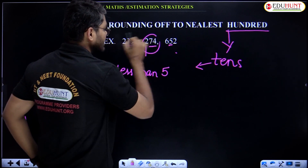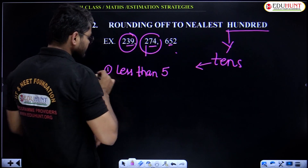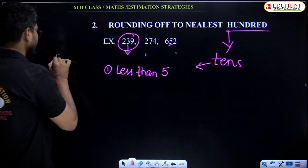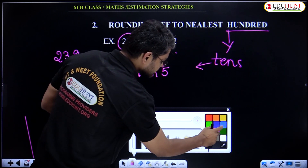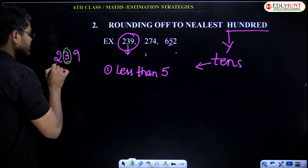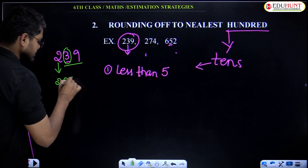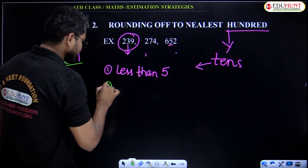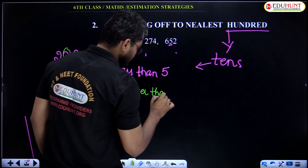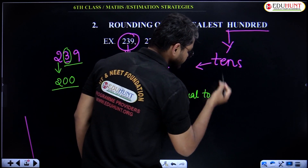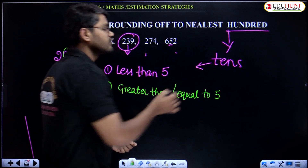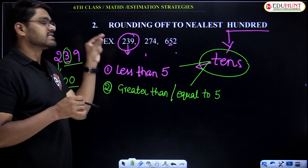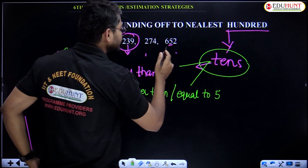For example, take 239. The tens digit is 3, which is less than 5. So keep the hundreds digit 2 as it is and remaining digits are 0, 0. Answer: 200. Second condition: if the tens digit is greater than or equal to 5, we add 1 to the hundreds digit and remaining digits should be 0s.